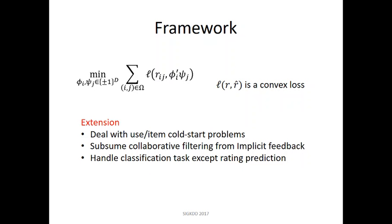First, the necessity of dealing with users and items cold start problems. Second, this algorithm should subsume collaborative filtering from implicit feedback, since implicit feedback is more prevalent and much easier to collect. Finally, this algorithm should handle the classification task in addition to regression. To this end, we developed discrete content work matrix factorization algorithm.